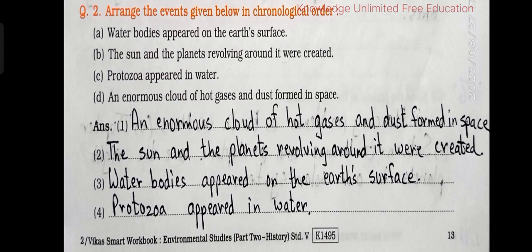Question number 2: Arrange the events given below in chronological order. Answer — Number 1: An enormous cloud of hot gases and dust formed in space. Number 2: The sun and the planets revolving around it were created. Number 3: Water bodies appeared on the earth's surface. Number 4: Protozoa appeared in water.